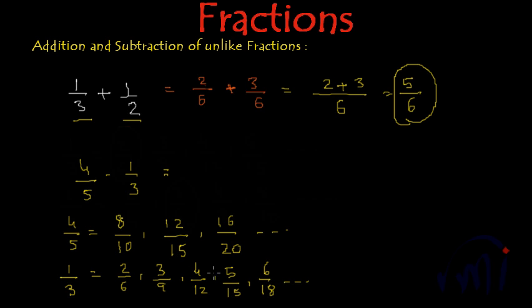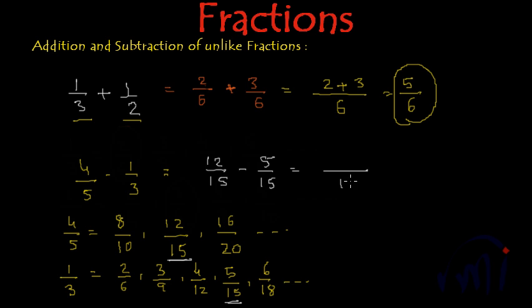Here we have got two like fractions where the denominators are both 15 — 12 by 15 and 5 by 15. So instead of finding the difference of 4 by 5 and 1 by 3, we can find the difference of 12 by 15 and 5 by 15. We write the denominator as it is and perform the subtraction among numerators. So 12 minus 5 is 7 by 15. The difference of 4 by 5 and 1 by 3 is 7 by 15.